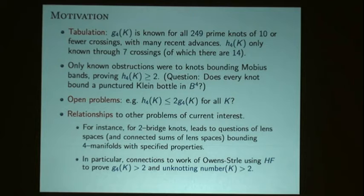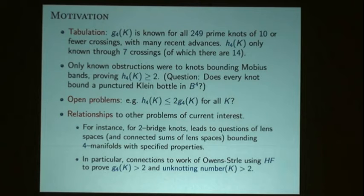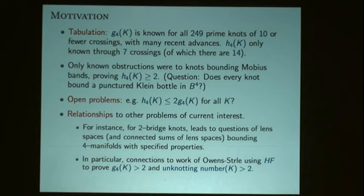If you look at two-bridge knots, the question right away, as you study the problem, turns into questions about lens spaces and what four-manifolds do lens spaces bound. This is certainly an area of lots of research now. One result connects to work of Bowens and Stroulet using Heegaard-Thurston methods to study the orientable four-genus of knots and unknotting numbers.